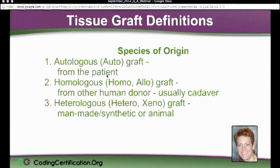So it's basically a graft coming from the patient. Then there's homologous, I hope I'm not butchering that word, grafts which are also known as homo or allografts, homo meaning same. So it's coming from the same species, so another human donor. Usually a cadaver because most people that are alive don't go around donating their skin.